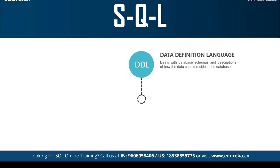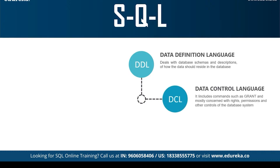DDL is very popular and extensively used when compared to other commands. Moving on to the next command: DCL, that is Data Control Language. It allows you to control access to the database. DCL commands include GRANT and REVOKE. GRANT gives user access privileges to the database, while REVOKE withdraws user access privileges that were given with the help of the GRANT command.